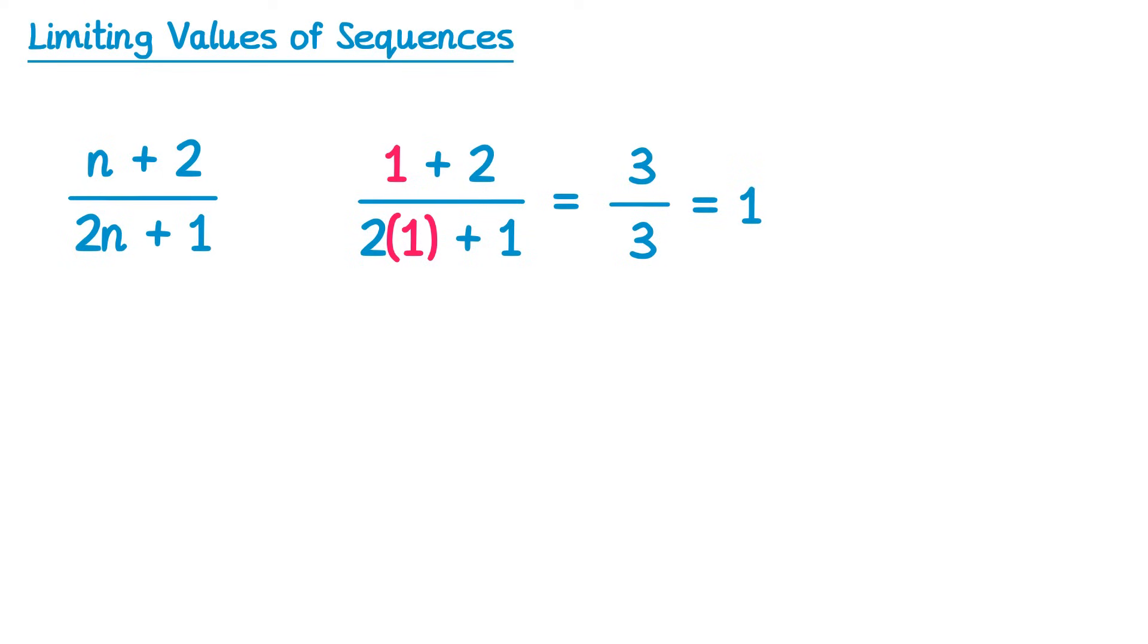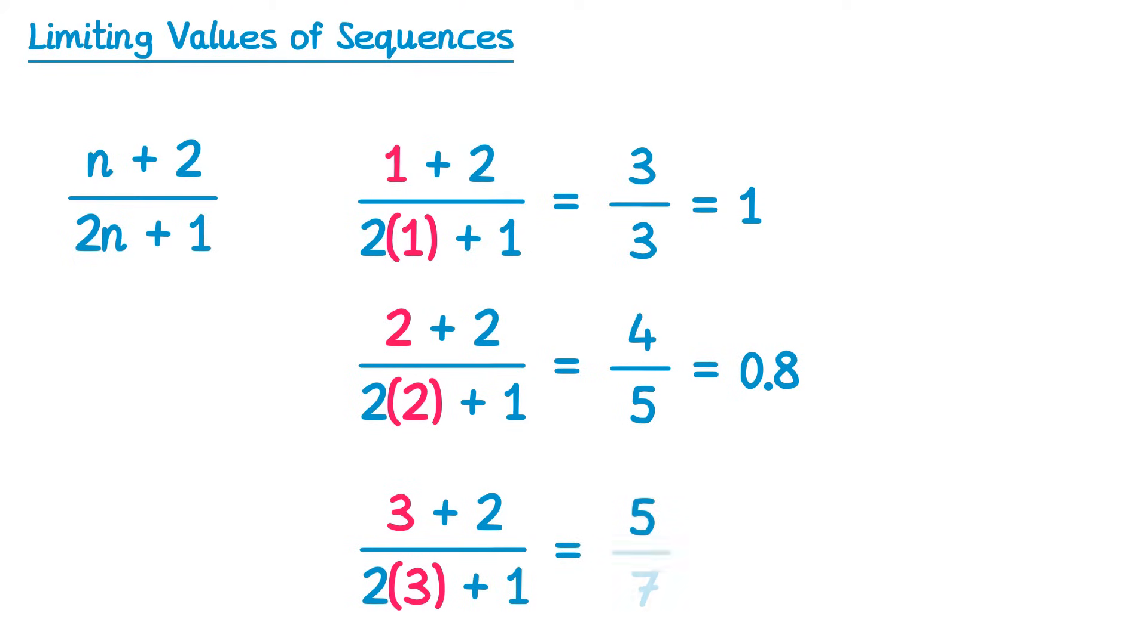The second term we replace n for 2, so we'd have 2 plus 2 over 2 lots of 2 plus 1, which gets you 4 over 5, which is 0.8. The third term, 3 plus 2 over 2 lots of 3 plus 1, is 5 over 7, which gets you this decimal.